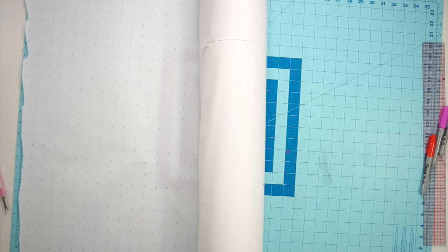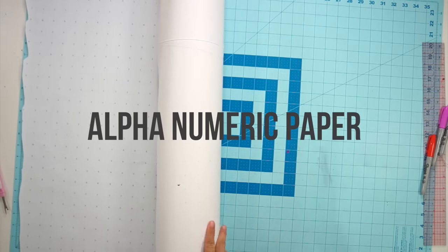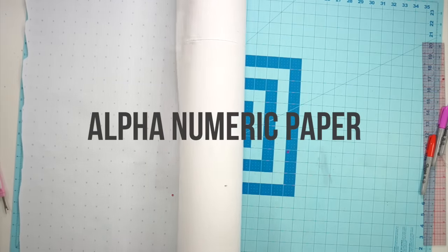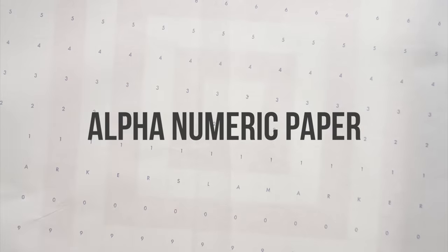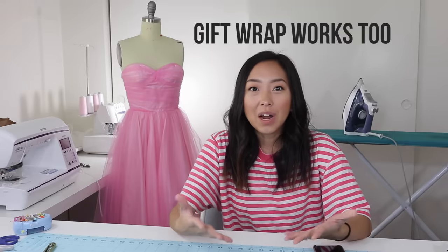So first let's talk about the materials and supplies that you're going to need to start pattern making. You'll need a large roll of paper. I used this alphanumerical dotted paper that I found on Amazon and I will link it below if you guys are interested.